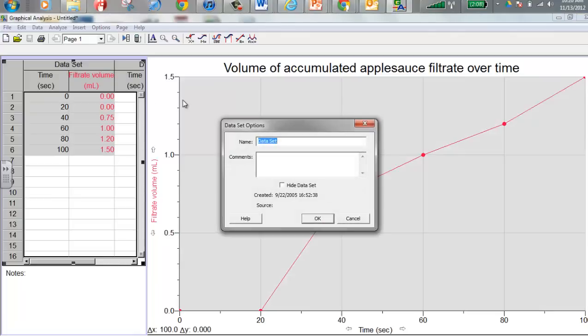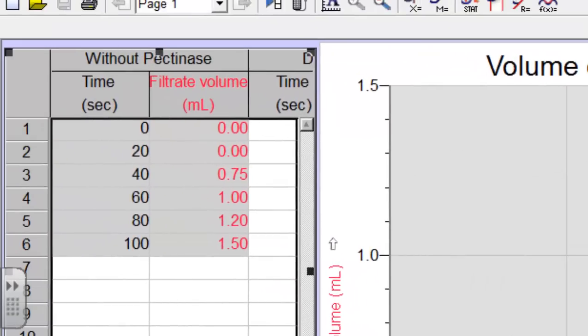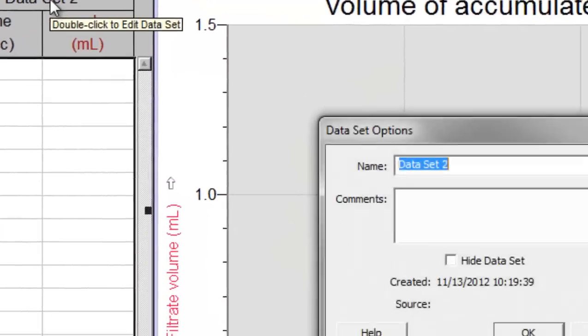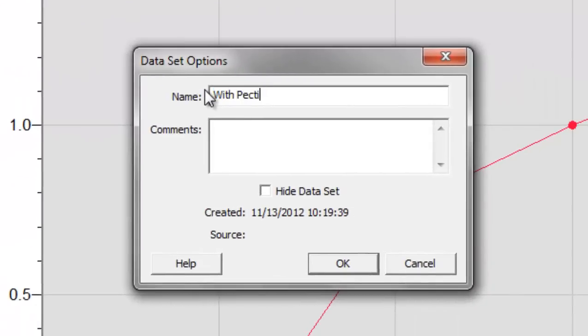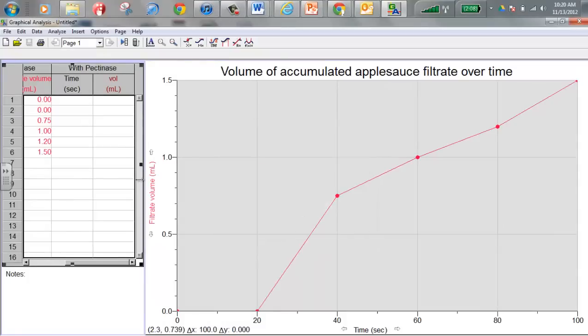It defaults as Data Set and then Data Set Two. It's going to be one graph, two lines on one graph, so I'm going to double click where it says Data Set and this is going to be - this was without the pectinase, just to keep everything straight. And I'm going to double click over here and I'm going to write this will be with the pectinase. I'll start entering time here. I'm going to put in zero and then zero, twenty and you have four at 20 seconds. At 40 seconds you had five, at 60 seconds you had six milliliters, and at 80 seconds you had 7.5 milliliters.